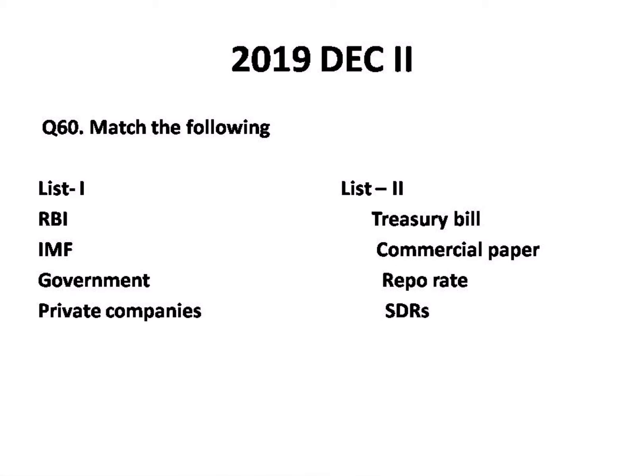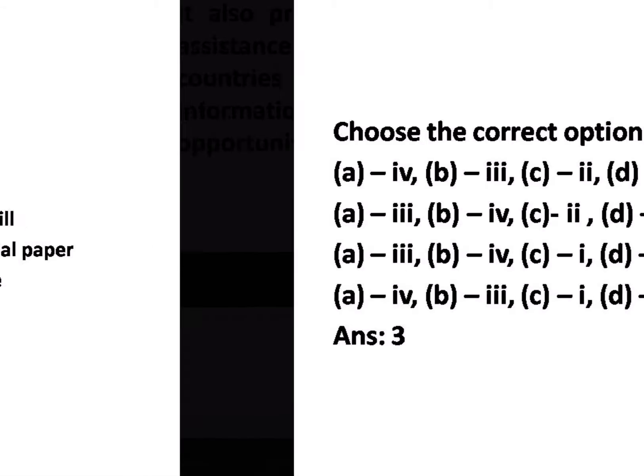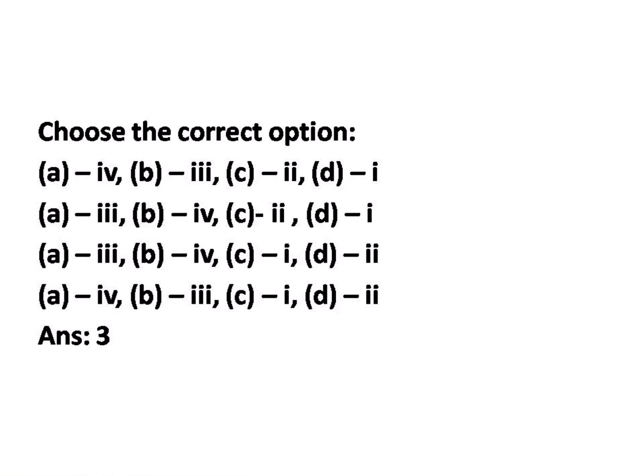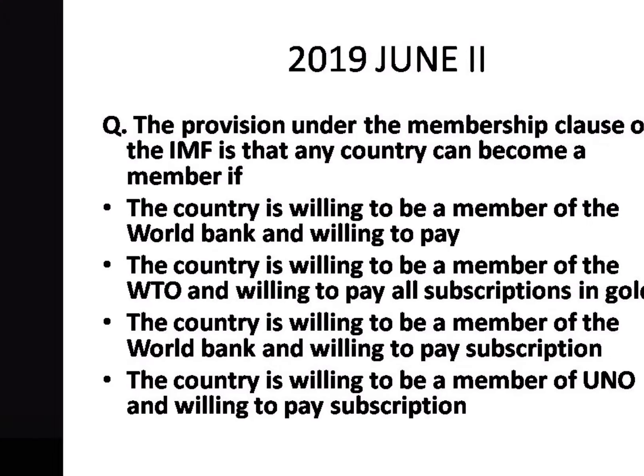RBI issues currency, government issues treasury bills - that is basically a promissory note which the government issues for repayment. Private companies issue commercial papers. Accordingly, the third option is the correct answer.